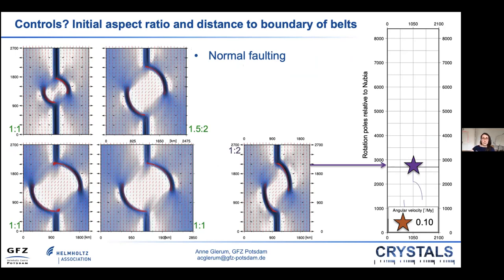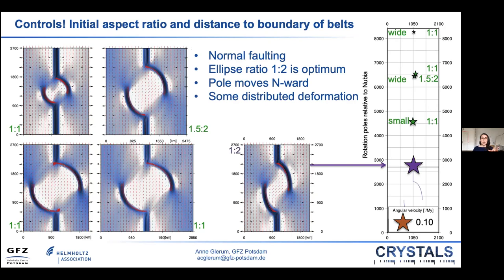The shape and size of the microplate — the aspect ratio of the ellipse — also proves important. When we increase the width of the ellipse we again obtain predominantly normal faulting. Comparing the rotation poles, it becomes obvious that the aspect ratio of 1:2 of the reference ellipse is optimum; for other ratios the poles move northward again.